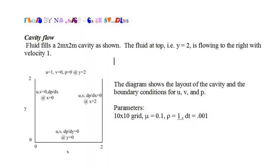Boundary conditions are shown in the diagram. The parameters for the simulation are the grid is 10 by 10, mu is 0.1, rho is 1, and dt is 0.001.